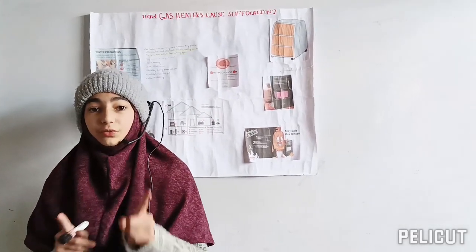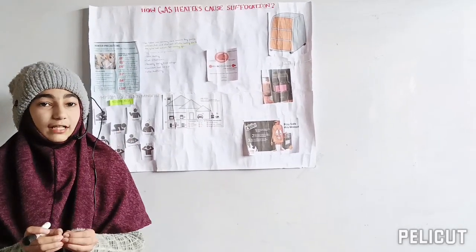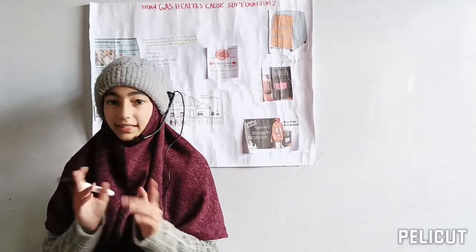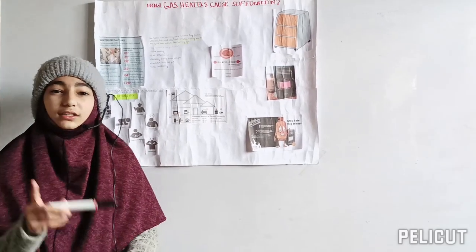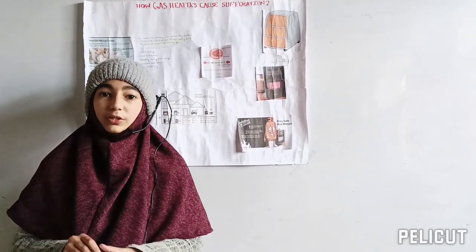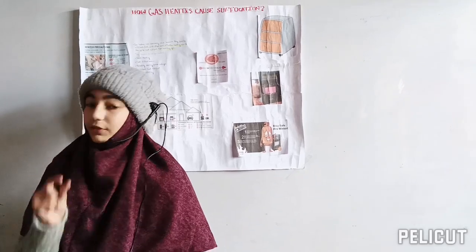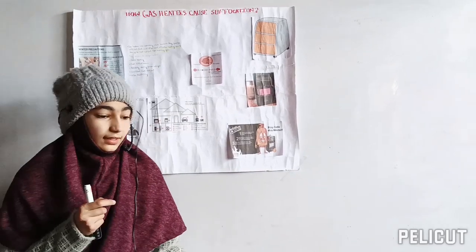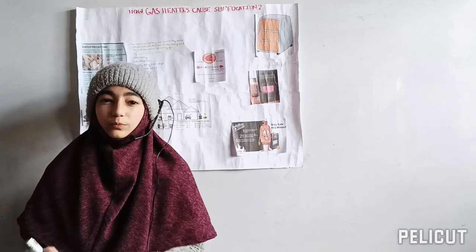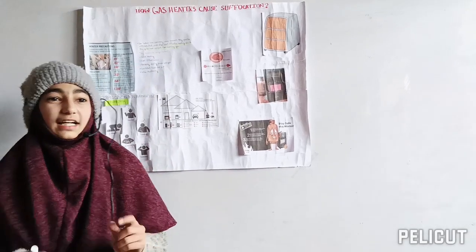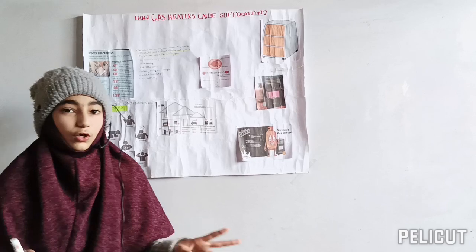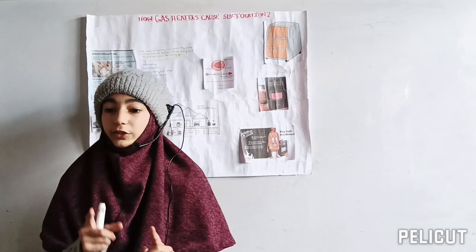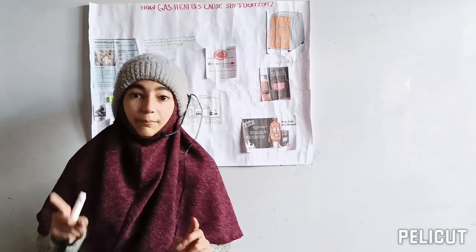The precautions you can take to save yourself or avoid this kind of tragedy is that you can buy a good quality gas heater. Good quality gas heater means you have to search for those gas heaters which release the least amount of carbon monoxide or unburnt gases. Now you should burn the gas heater inside a fully ventilated room. Fully ventilated room means that you can leave two or one windows open and a door open. The most important thing you can do is to switch off the gas heater before you go to bed.